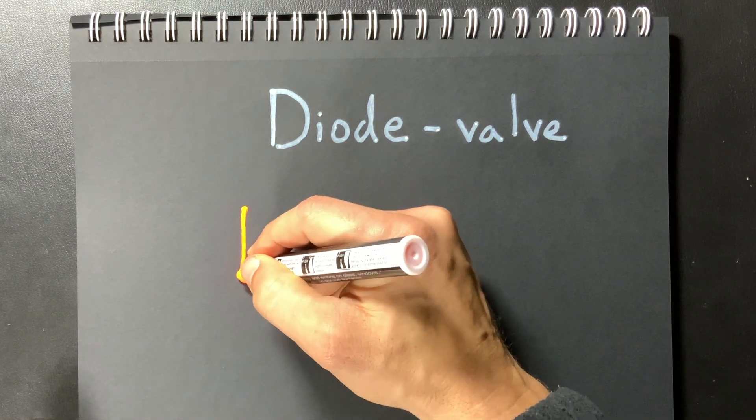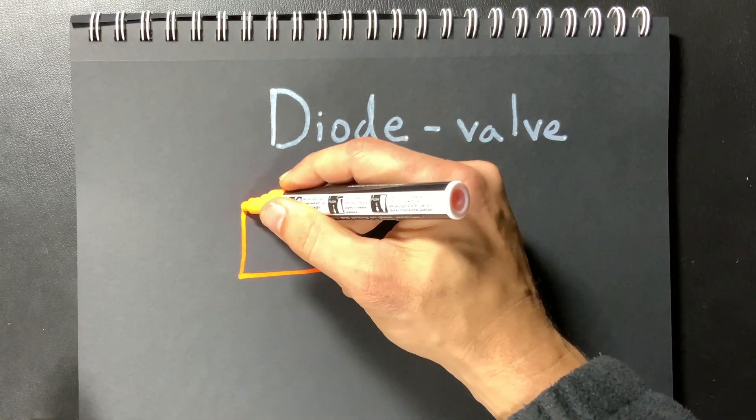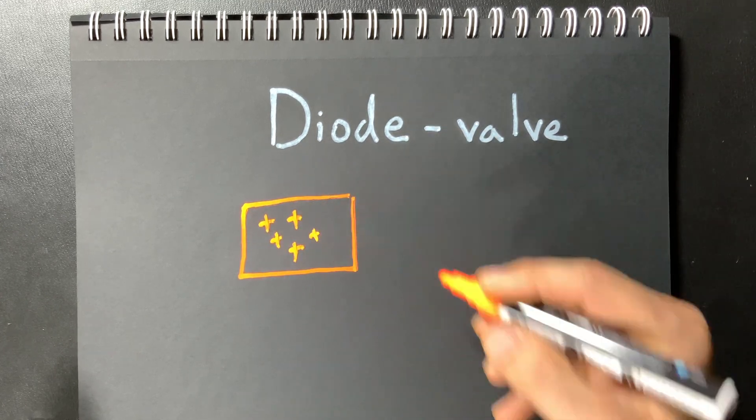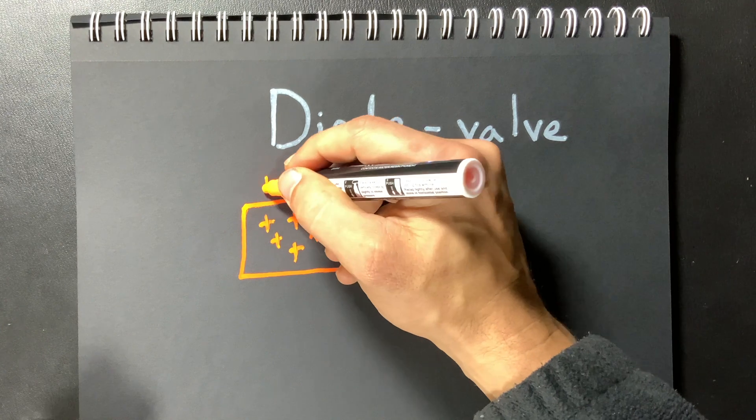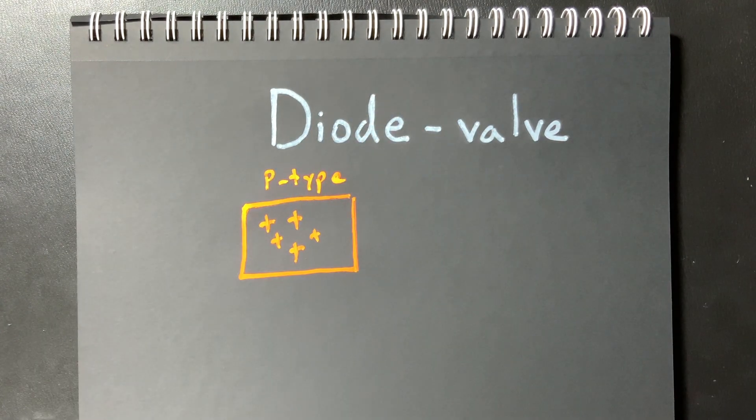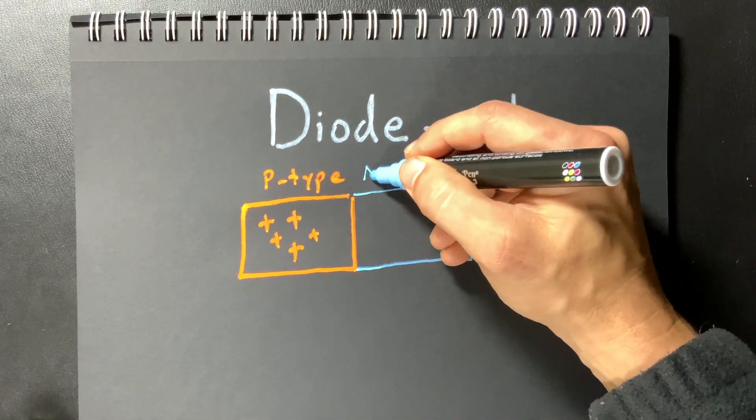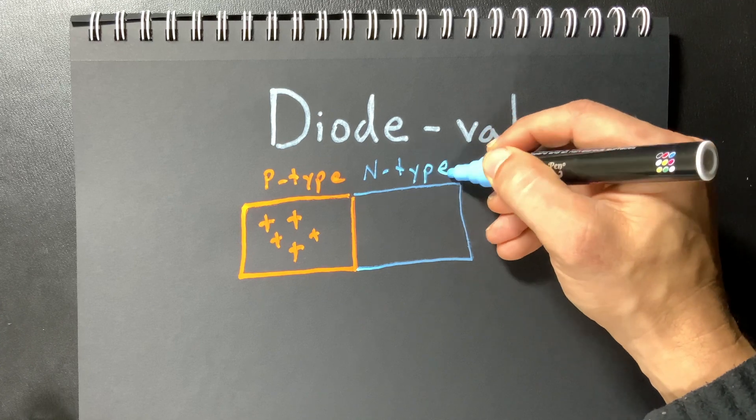So why is that? Well a diode consists of a p-type semiconductor which has excess positive charges and it also has an n-type semiconductor. The n-type semiconductor of course consists of net negative charges.